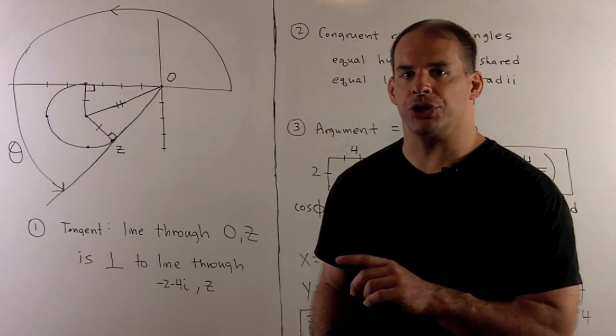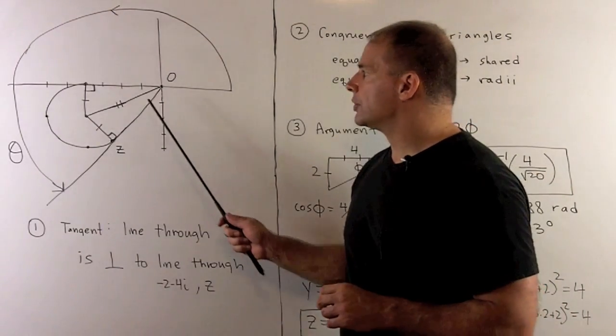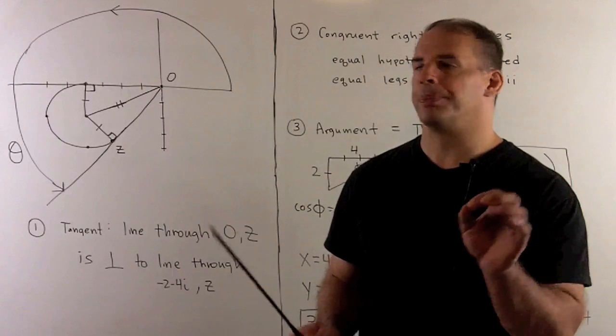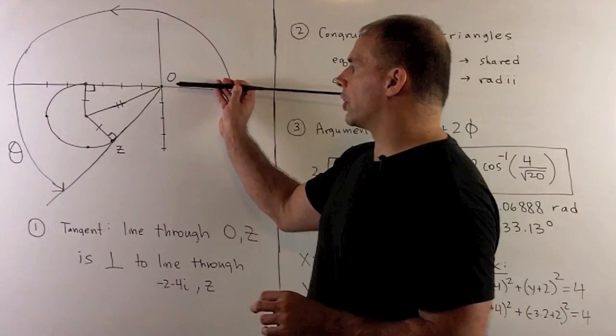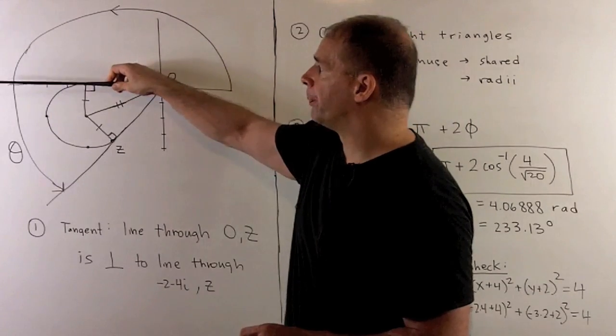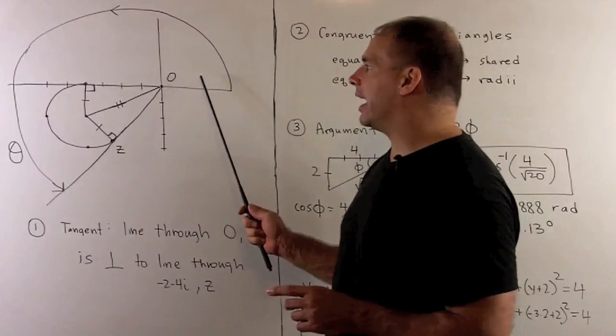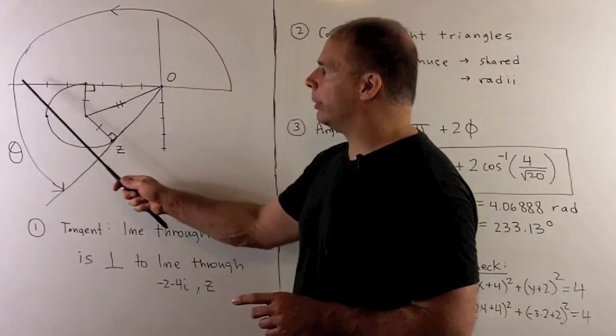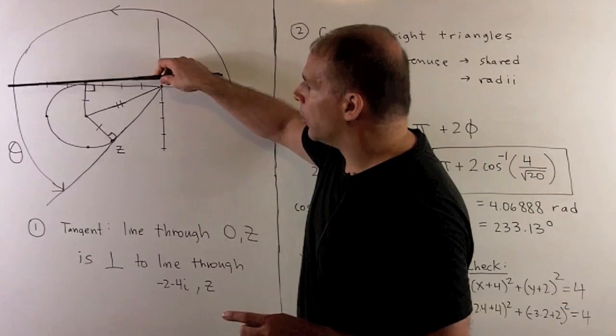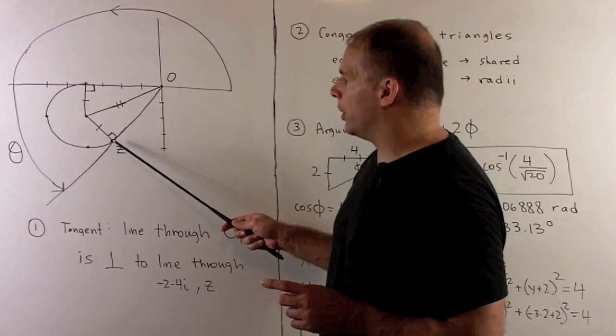Now, let's use our picture to find the largest argument for points on C. Draw on our circle here. If I'm looking for arguments, what we do is start on the positive real axis. We start sweeping until we hit our circle. So, the first point we'll hit will be at minus 4 on the real axis. In that case, the angle will be pi, or 180 degrees. As we continue, we're going to keep hitting points on the circle. We'll stop when we get to this point z here.